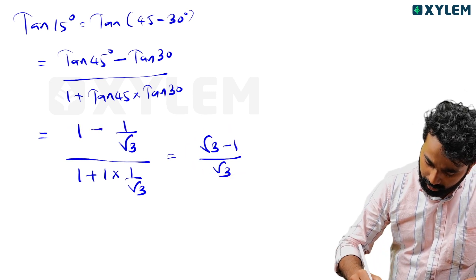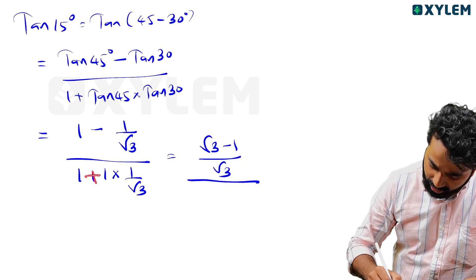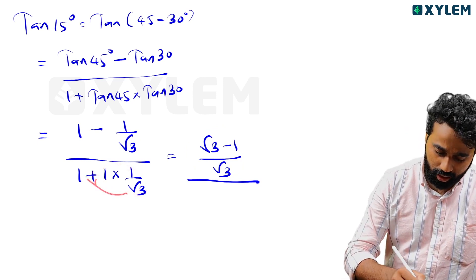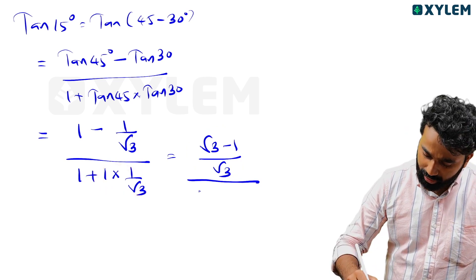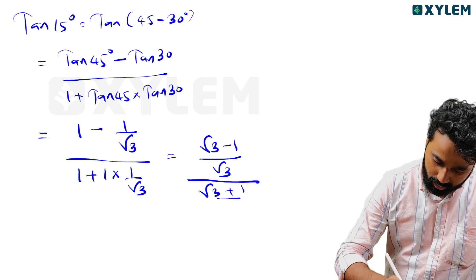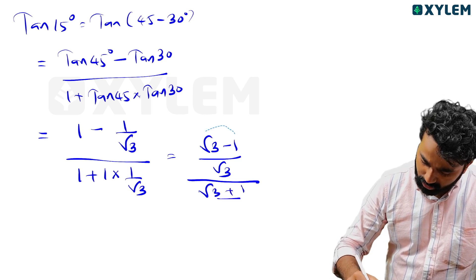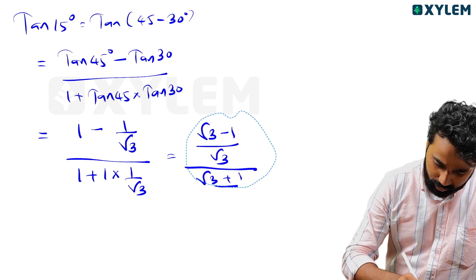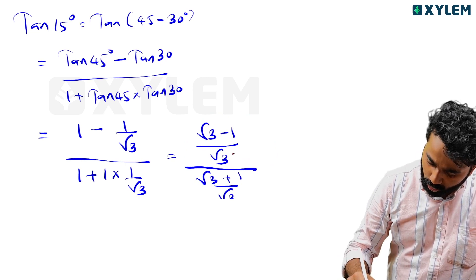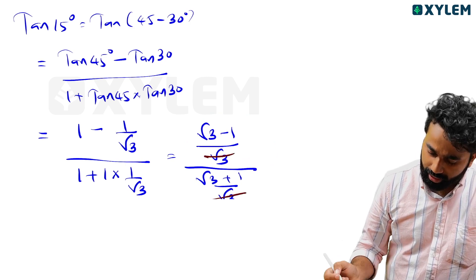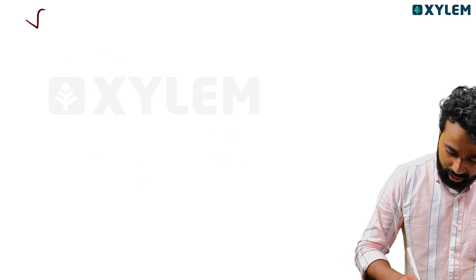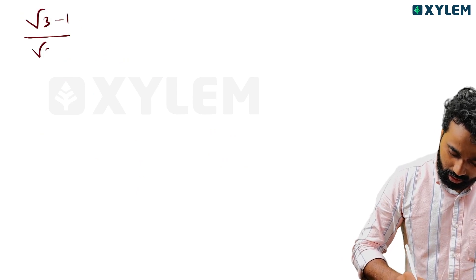All divided by: 1 plus 1 into 1 by root 3, root 3 is cross multiplication, root 3 plus 1 by root 3, root 3 plus 1 divided by root 3. So the answer is root 3 minus 1 by root 3 plus 1.